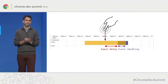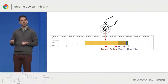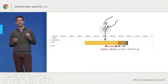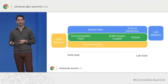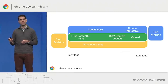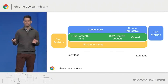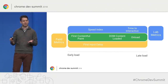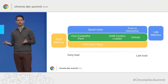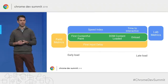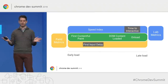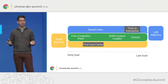First input delay is just the first input on the page — the first time a user touches a page. The important thing here is that first input delay is a field metric; it really only makes sense to gather in the field. Time to interactive is a great and powerful metric, but it makes sense mostly in the lab. TTI out in the field, where real users are tapping on the screen as the page is loading, really kind of messes with this metric. TTI and FID are our interactivity metrics, really key for understanding how available the main thread is to the user.